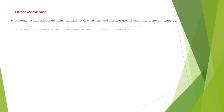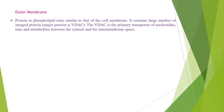The outer mitochondrial membrane, which encloses the entire organelle, is 60 to 75 angstroms thick. It has a protein to phospholipid ratio similar to the cell membrane and contains large numbers of integral membrane proteins called porins. A major trafficking protein is the pore-forming voltage-dependent anion channel or VDAC. The VDAC is the primary transporter of nucleotides, ions and metabolites between the cytosol and the intermembrane space. It is formed as a beta-barrel that spans the outer membrane, similar to that in the gram-negative bacterial membrane.